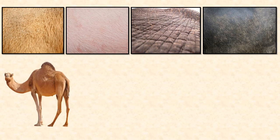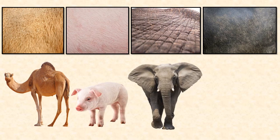Animal hair is called fur. Look at these pictures — these animals have hair on their skin. Can you guess who they belong to? Well, the first one is of a camel. Then we have the pig, the elephant and the buffalo.